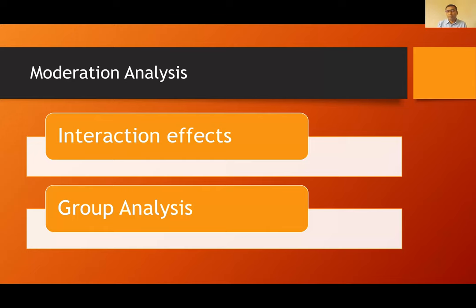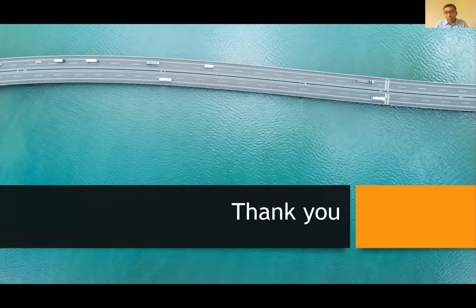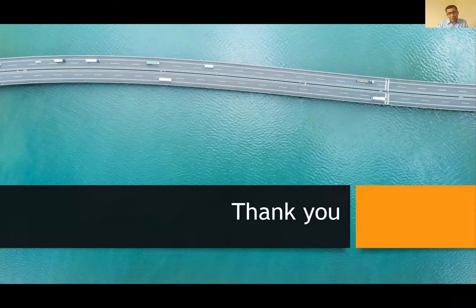If your variable is not dichotomous or nominal — meaning you don't have clear groups in your moderating variable — then you will work with interaction effects. For example, age and gender are clear groups. In that case, we work with group analysis. But if the moderator is measured as a continuous variable similar to other variables in your model, it will follow interaction effects. Interaction effect is the most commonly used moderating analysis. For example, Fayaz is collecting data from Pakistan, Canada, and Italy — three groups — so we would use group analysis rather than interaction effects.